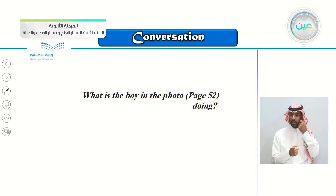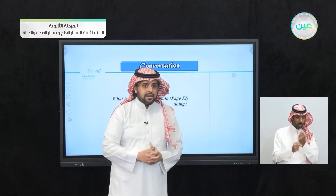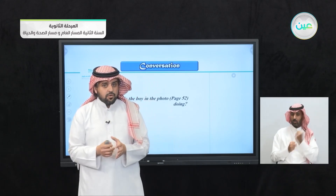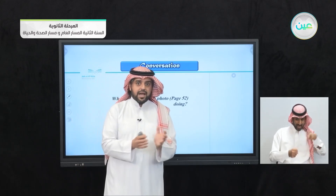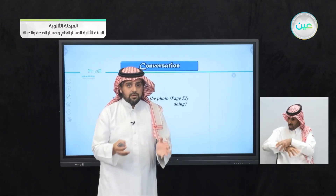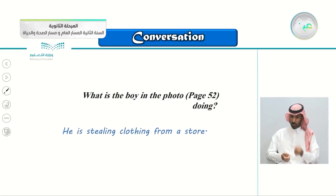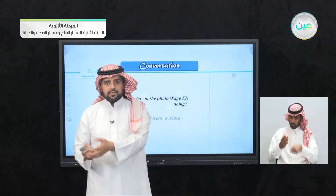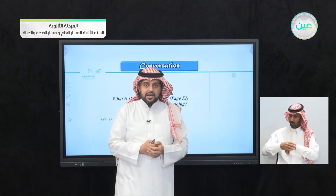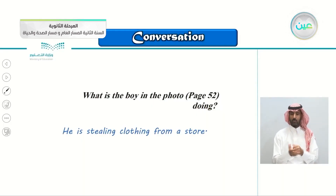What is the boy in the photo doing? Open your book to page 52 and look at the picture. Is he doing something right or wrong, ethical or unethical, moral or immoral? From the picture, he's doing something wrong — something immoral, something unethical. He is stealing clothing from a store. He went to a clothes store and instead of buying the clothes, he is stealing them — putting the clothes inside his jacket so no one can see them.